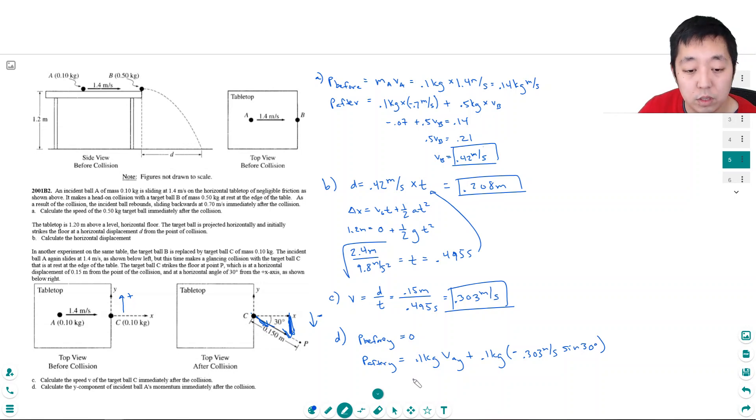This is equal to zero because they have the same mass. I could divide by the 0.1 kilogram; they have the same mass, it'll cancel with the zero. So v A y is just simply equal to 0.303 sine 30 degrees, which is 0.151 meters per second.